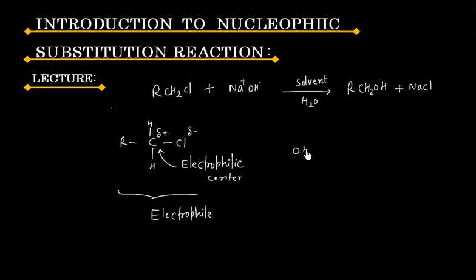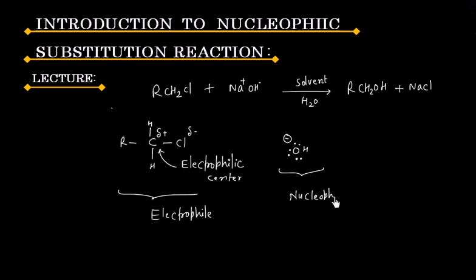And OH⁻ has an excess of electrons, so it can donate a lone pair of electrons and will act as a nucleophile. The above reaction is a reaction of an electrophile and a nucleophile.